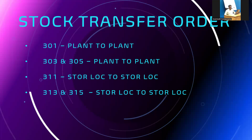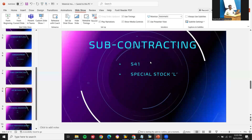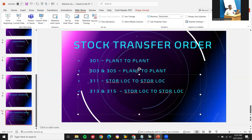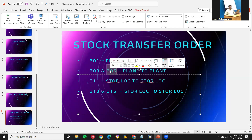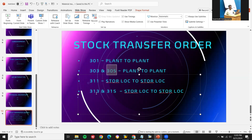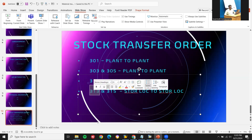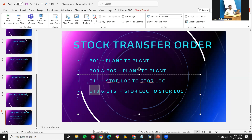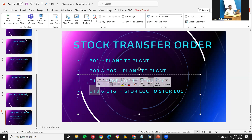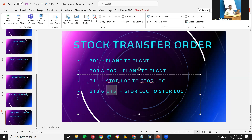For the two-step procedure from plant to plant: in the first step using 303, the stock will be in transit state. In the second step using 305, you receive the stock. Similarly, for storage location two-step procedure: 313 puts the stock in transit, and in 315 you receive the stock.